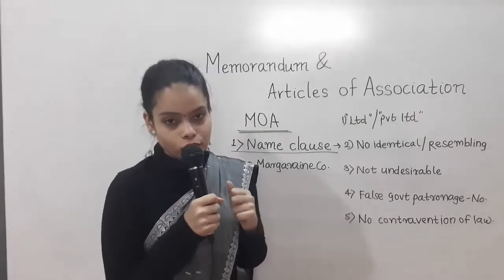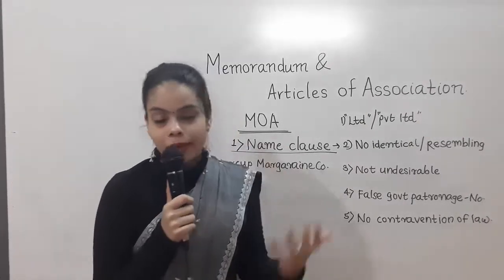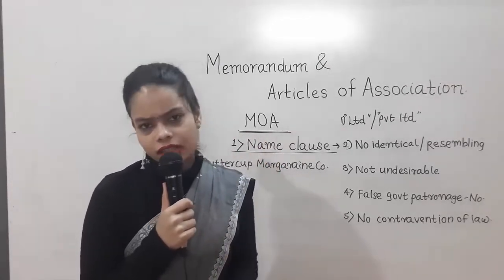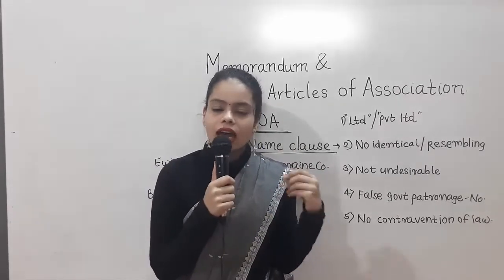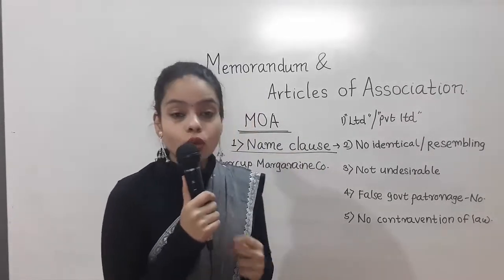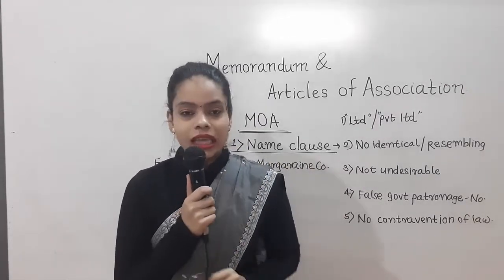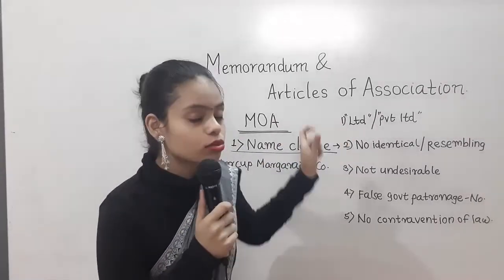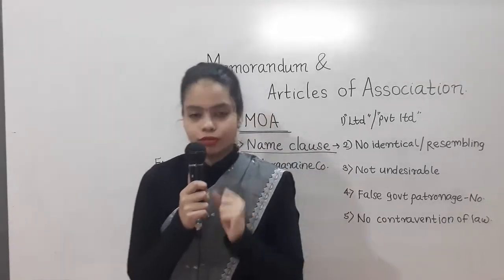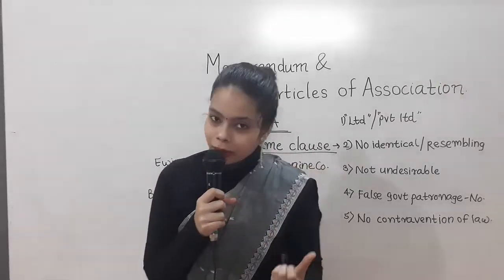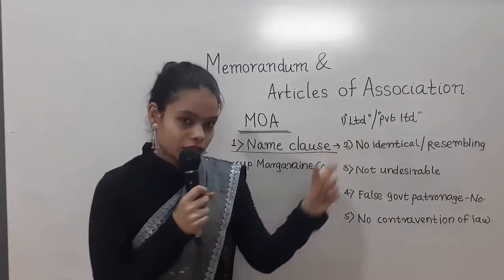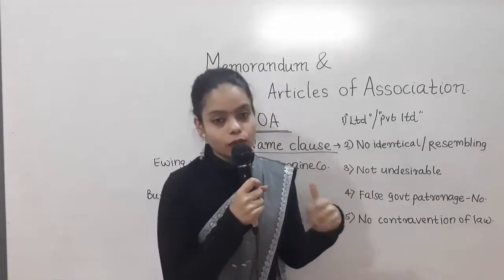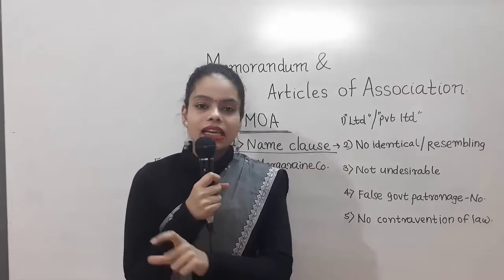Let's start with understanding the name clause. It is obvious that the memorandum of association must mention the name of the company. We can get our company registered under any name we desire. However, there are some restrictions. The most important one is the use of the word 'Limited' or 'Private Limited' after the name of the company. If your company is a public limited company, the word 'Limited' must be added after the name — for example, ABC Company Limited. If the company is private limited, the words 'Private Limited' should be added, like ABC Company Private Limited.